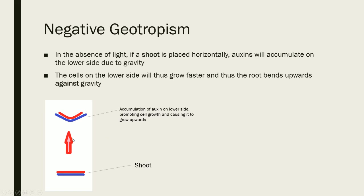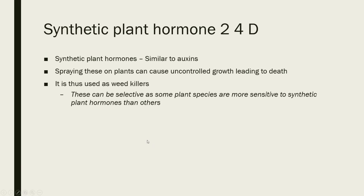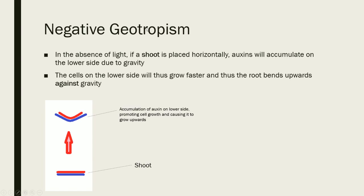There's also a simplified diagram as before summarizing this. Let's also take a quick look at the synthetic plant hormone 2,4-D. This synthetic plant hormone is very similar to auxins. By spraying this substance on plants it can cause uncontrolled growth and therefore lead to death. It is used in weed killers and can be very selective, because some plant species are a lot more sensitive to synthetic plant hormones than others, so you can kill off certain plants but leave others that you want to keep. The most important concepts to grasp are auxins, phototropism, and gravitropism. Note that geotropism and gravitropism are basically the same thing and can be used interchangeably.